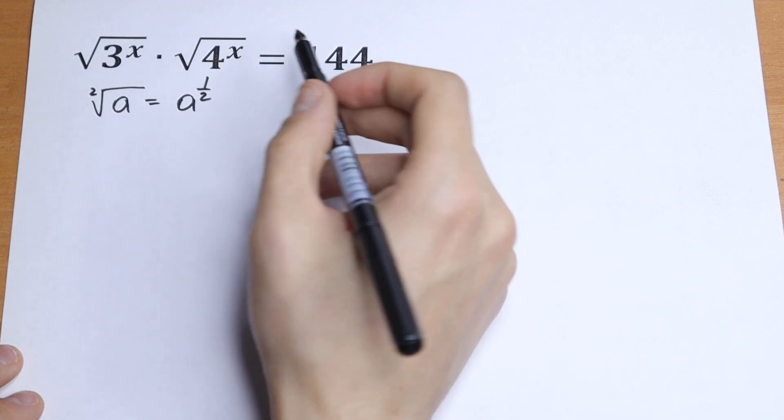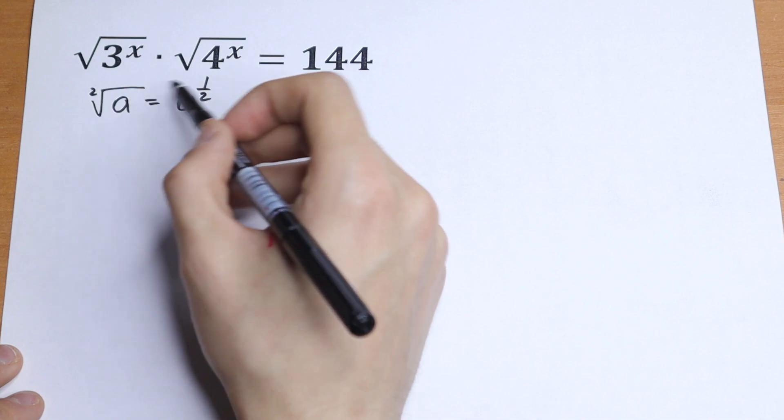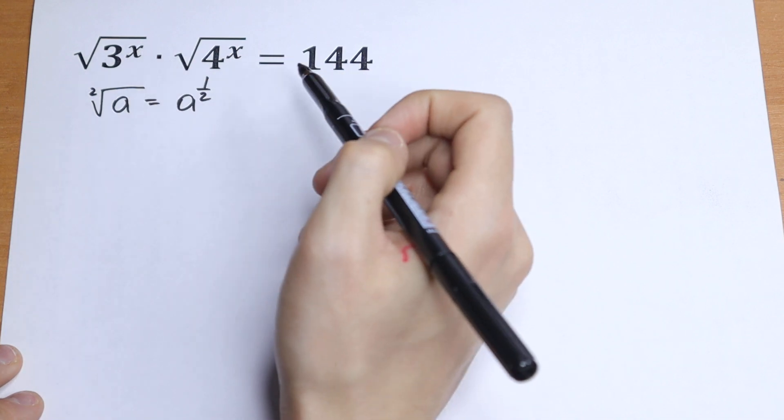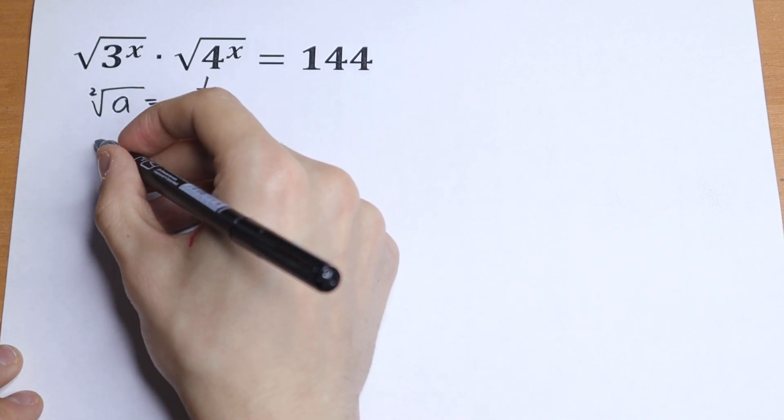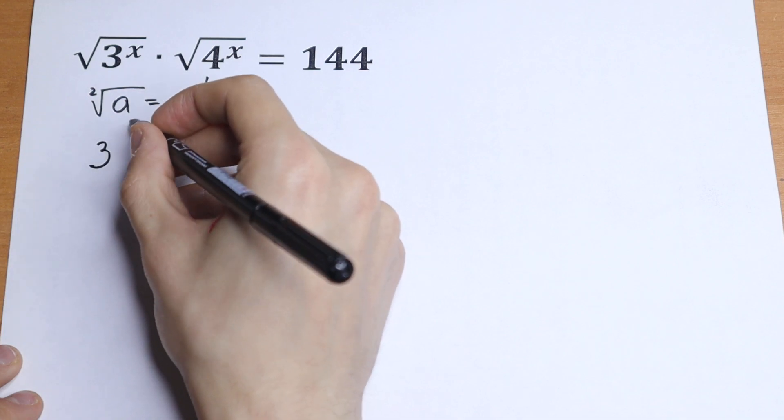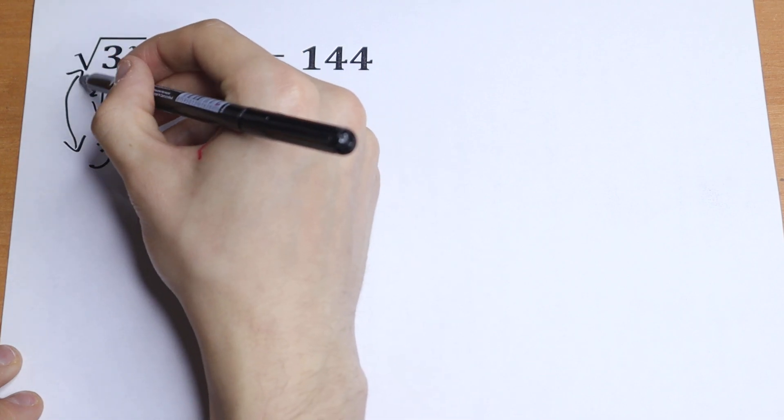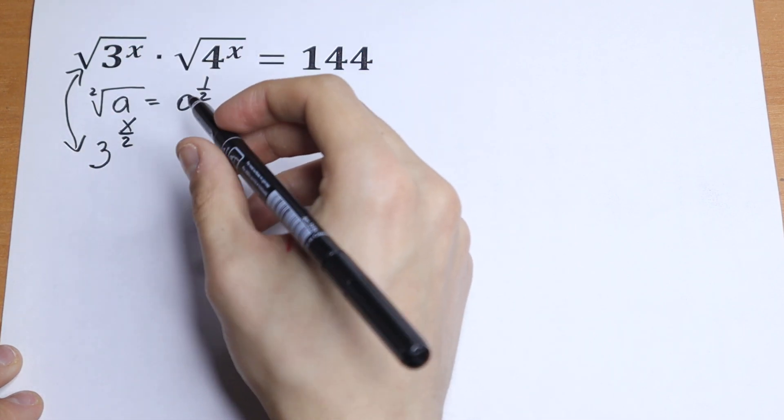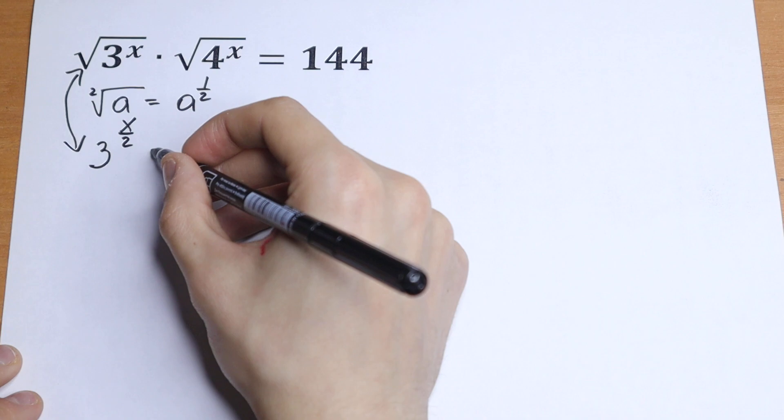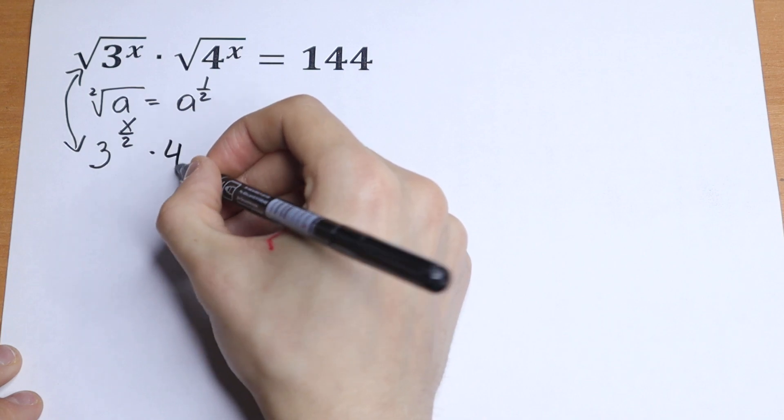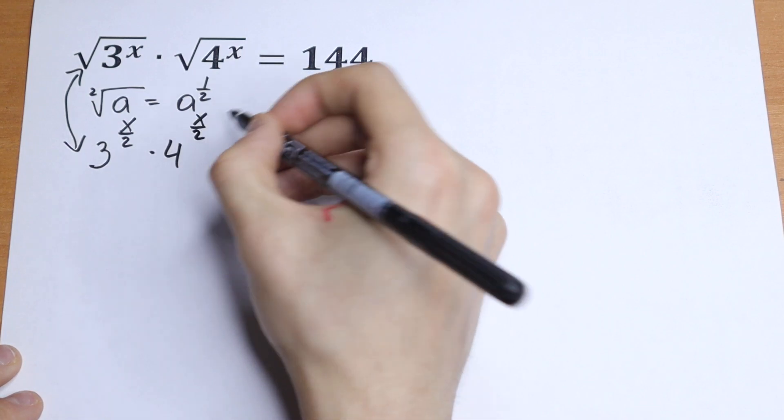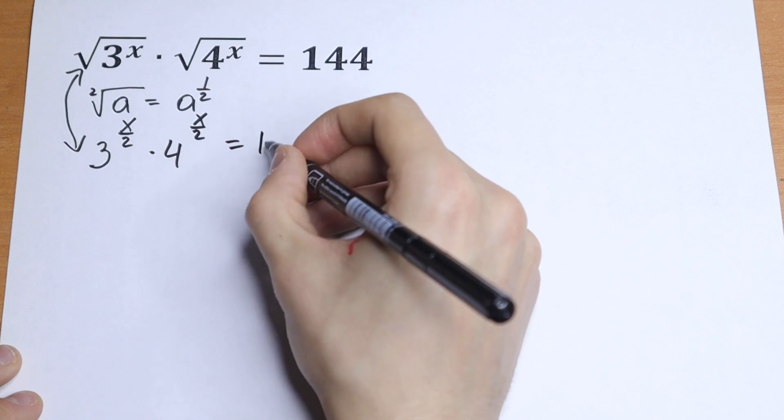So let's do the same thing right here, but with this 1 we have x. So what are we gonna do? We can write this as 3 to the power x over 2. And with this fourth root we can do the same thing: 4 to the power x over 2, equal to 144.